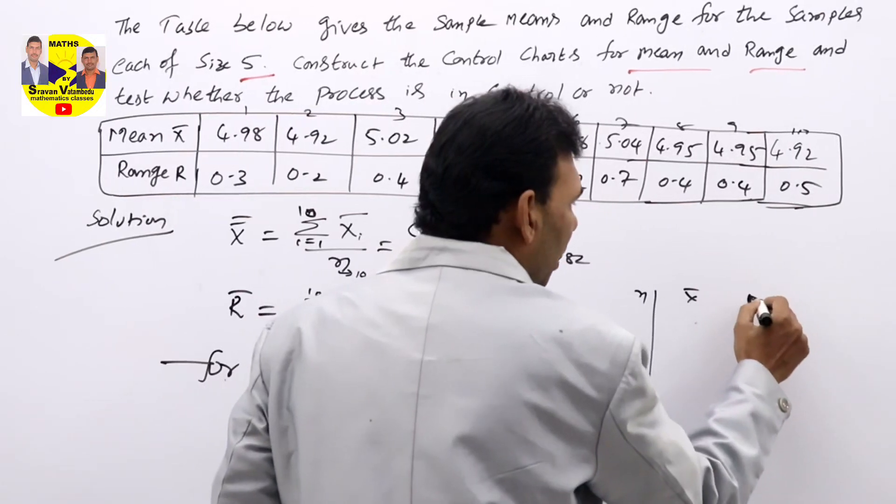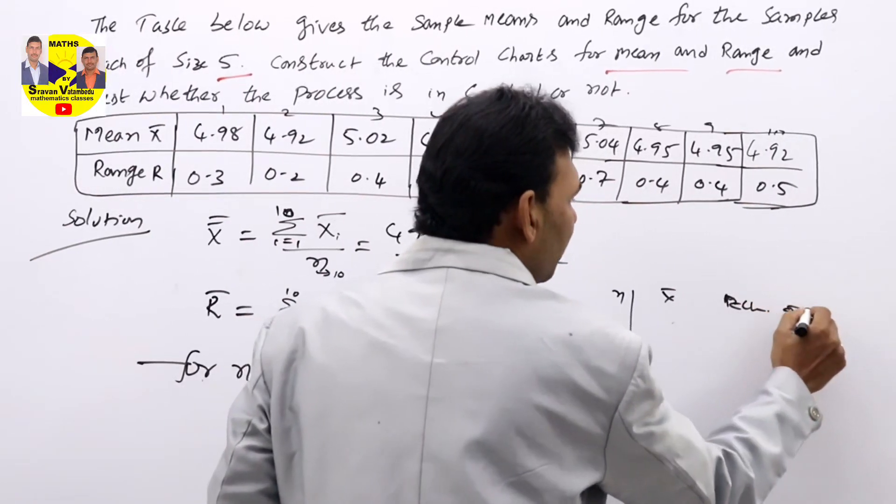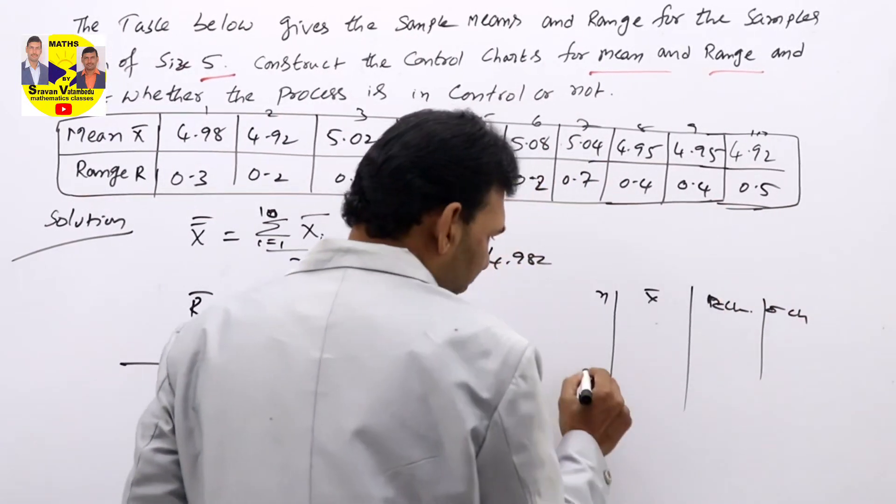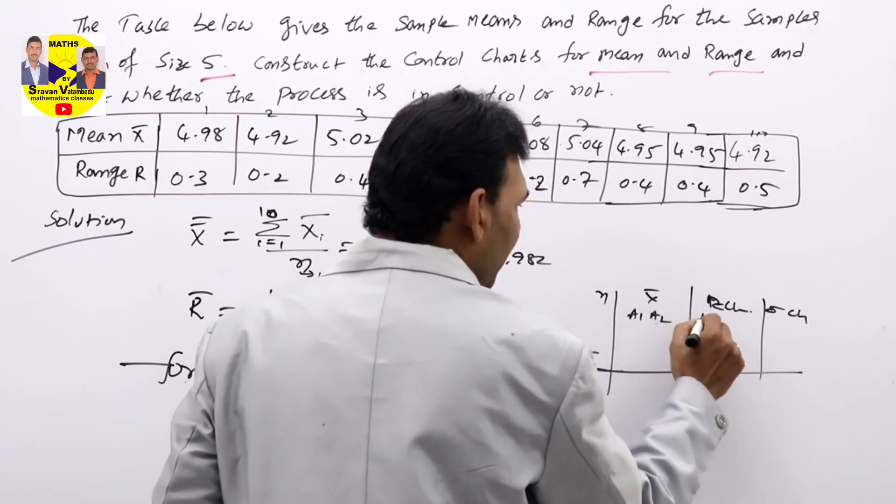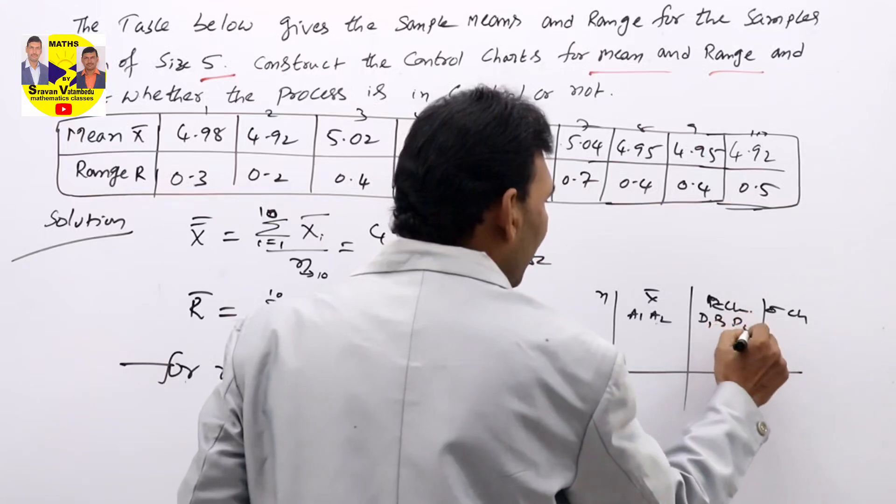In the n equal to 5 line, you will have a table like this. Here, sample sizes will be there: X bar chart, R chart, sigma chart—those values will be there. Here, in the n equal to 5 line, you will get A1, A2 values here, D1, D2, D3 values here.